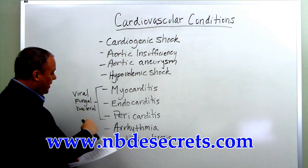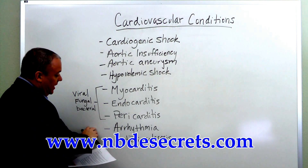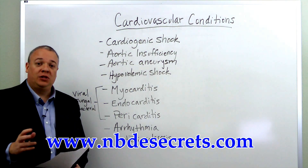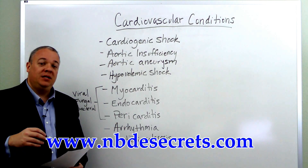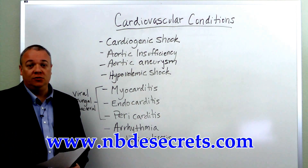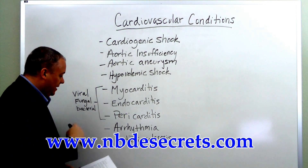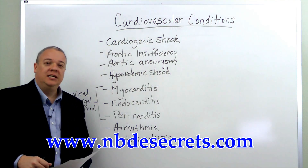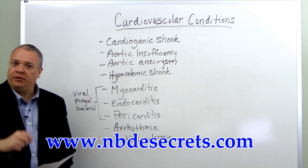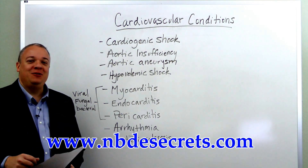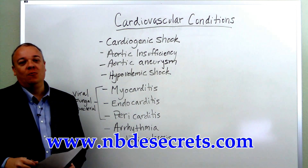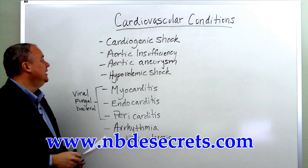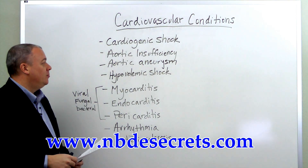Other cardiovascular conditions include arrhythmia — rhythm problems with the heartbeat itself not beating correctly, either too fast or too slow. And finally, arteriosclerosis, which is a hardening of the artery walls. These are just a few of the various cardiovascular conditions and their brief definitions.